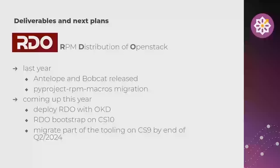What's coming up this year: we want to deploy RDO with OKD — Alfred and Carolina will talk about that in more detail in the next presentation. It's RDO on top of OKD. Once we have CS10 composed, we'll be able to bootstrap RDO on it. And finally, we need to migrate part of our tooling from CS8 machines to CS9, because CS8 is end-of-life in May of this year.